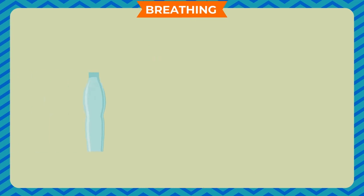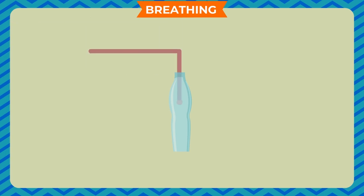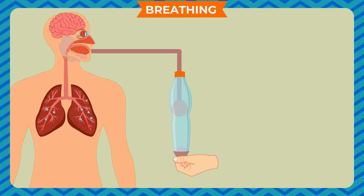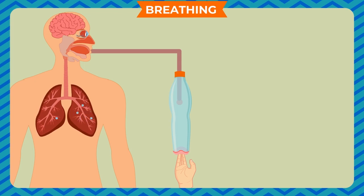To demonstrate the mechanism of breathing, take a transparent plastic bottle and cut off its bottom. Make a hole through the cap and pass a straw through the hole, attaching a balloon to the end inside the bottle. Fix the straw to the cap using plasticine. Stretch a balloon rubber sheet across the cut end of the bottle. When you pull the rubber sheet down, the balloon attached to the straw gets filled with air. When you push the rubber sheet up, the balloon deflates. This shows the mechanism of breathing.